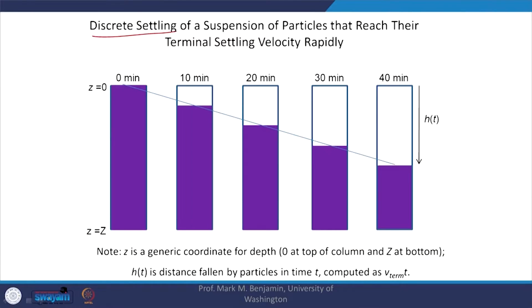Here we have discrete settling of particles, where gravity minus buoyancy equals the drag force — the particle has reached its terminal settling velocity. In the settling column, with depth it decreases. This line is a straight line because the velocity is constant in discrete settling. We are assuming all particles are more or less the same size, which is why we have entirely clear liquid at the top and particles concentrated at the bottom.